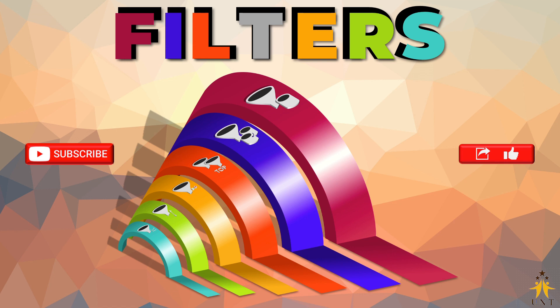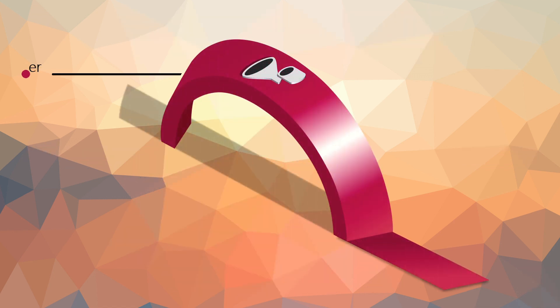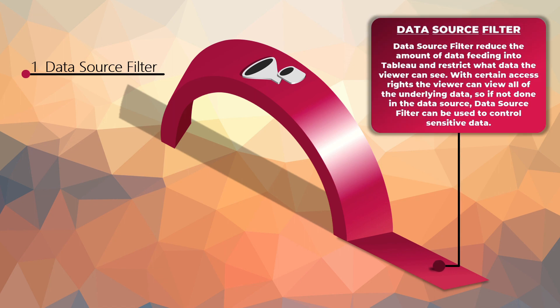As a filter's task is to remove extra values and rows from data, the first filter we have is the data source filter. I have mentioned a link to a video in the description that would explain the data source and data source panel in Tableau. Data source filter reduces the amount of data that is fed into Tableau, restricting what viewers can see. It filters the data from the table or sheet that is directly connected with Tableau.